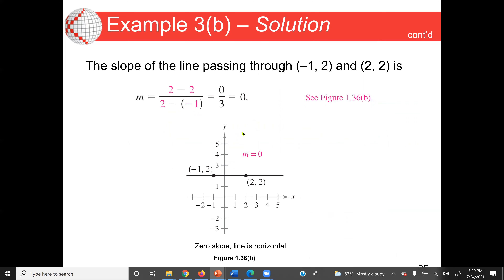Applying the same concept to the second example: we have two points and subtract y2 minus y1 then divide by x2 minus x1. We get 2 minus 2 equals 0 in the numerator, and 2 minus (negative 1) equals 3 in the denominator, so we get 0/3 — the slope is 0. Since the y-values are the same, the slope is horizontal — it's constant horizontally.